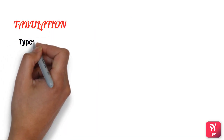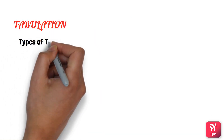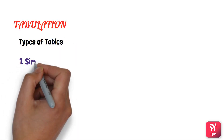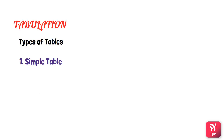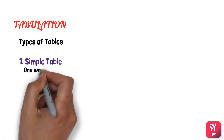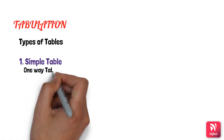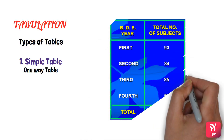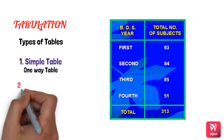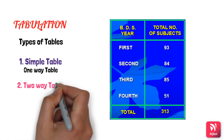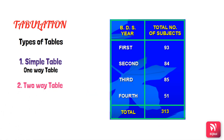The first one is tabulation. Once the data is collected, it needs to be presented. When you present it in the form of a table, you have different types. The first one is the simple table or one-way table, where the data is tabulated based on a single characteristic. Here the BDS students are tabulated depending upon the year in which they are studying — a single characteristic.